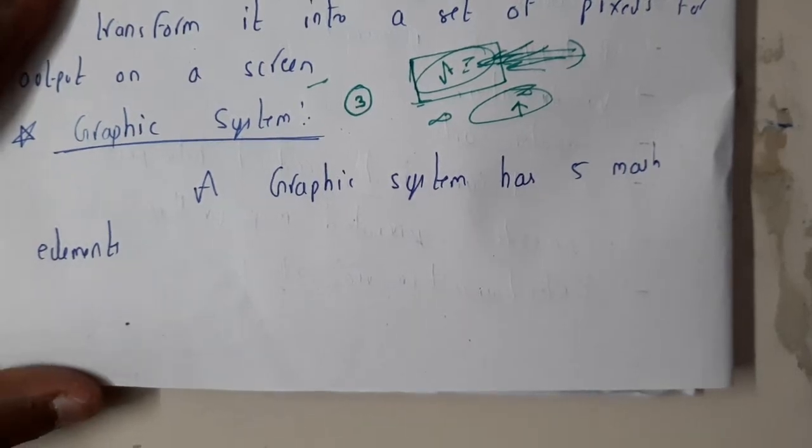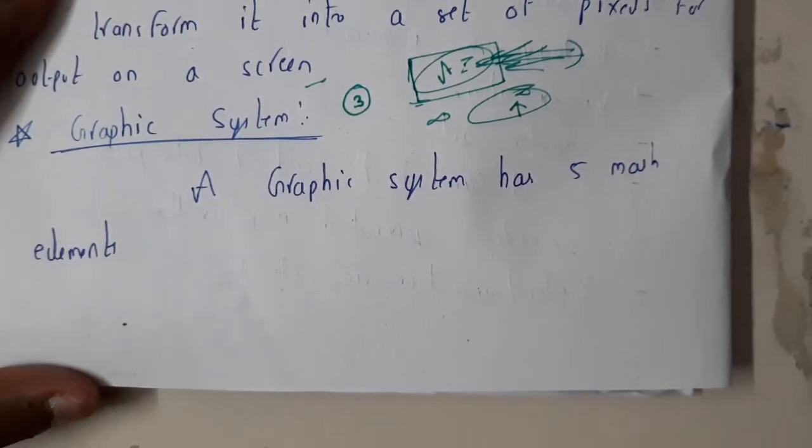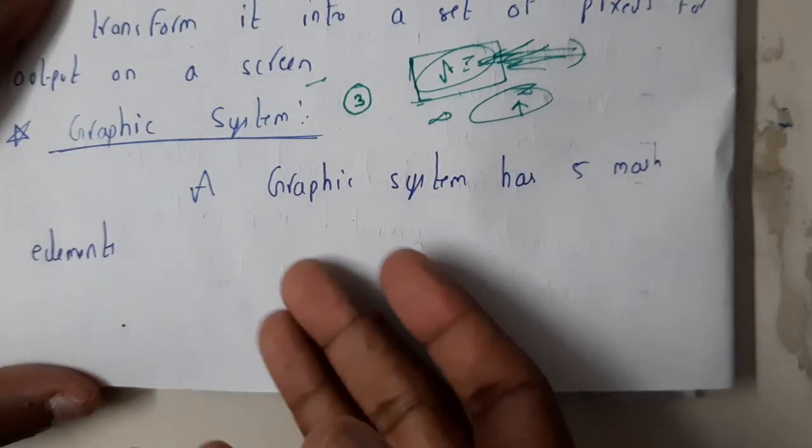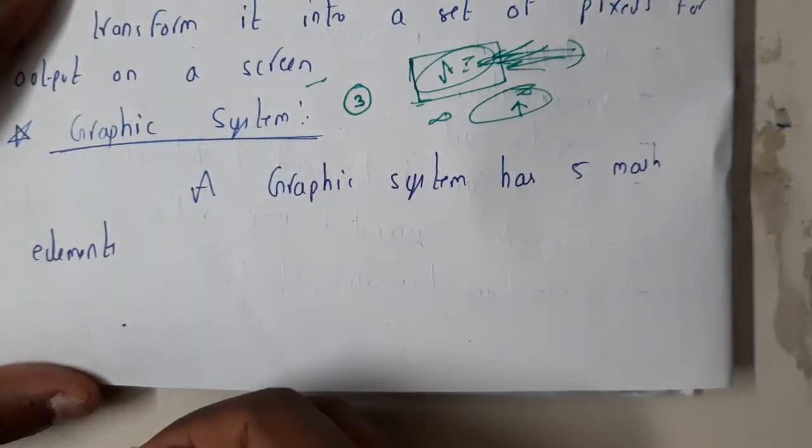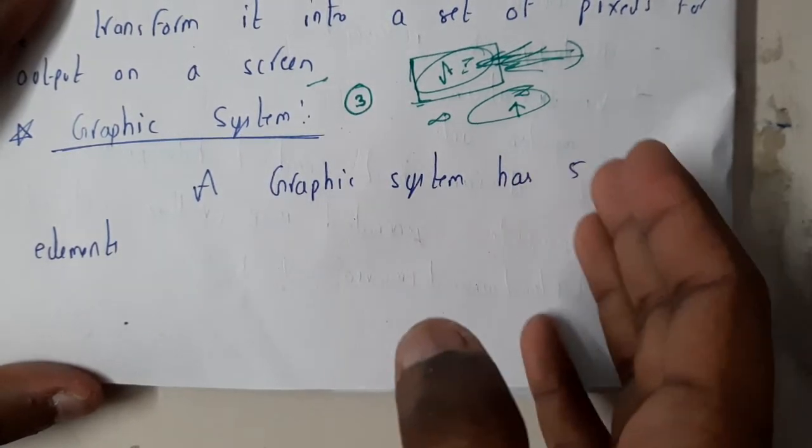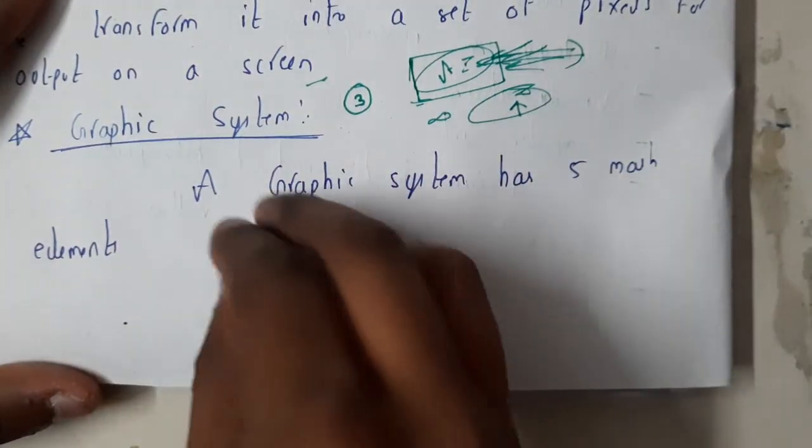Hello guys, we are back with our next tutorial. In this tutorial, let us go through graphical system. Whenever you do something in graphics, how is it going to process or happen? How are you giving the input, how is it processing, how is it storing in the memory, how is it pushing into the frame buffer, and how is it displaying on your screen? These are all the activities done in our graphic system.